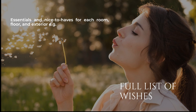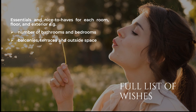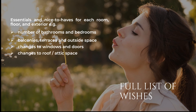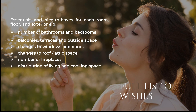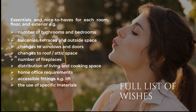Here you can list out your essentials for each room or floor as well as the nice-to-haves. You may want to include things like number of bathrooms and bedrooms, balconies, terraces and outside space, changes to windows and doors, changes to roof and attic space, the number of fireplaces, how to distribute the living and cooking space, your home office requirements, any accessible fittings such as a lift, and the use of specific materials. It's helpful to organise these according to structural elements, interiors and materials. But remember, you may not be able to achieve your full list.